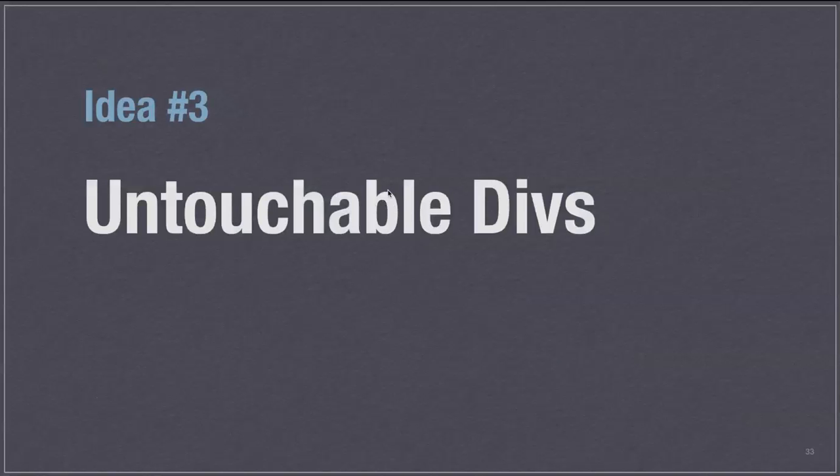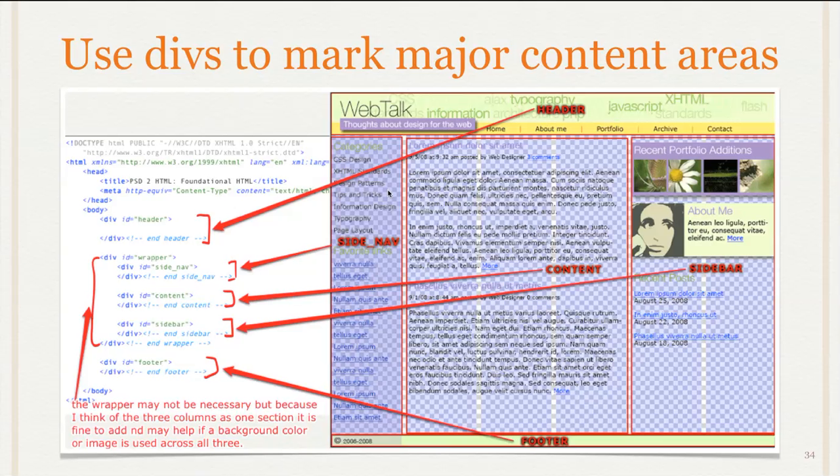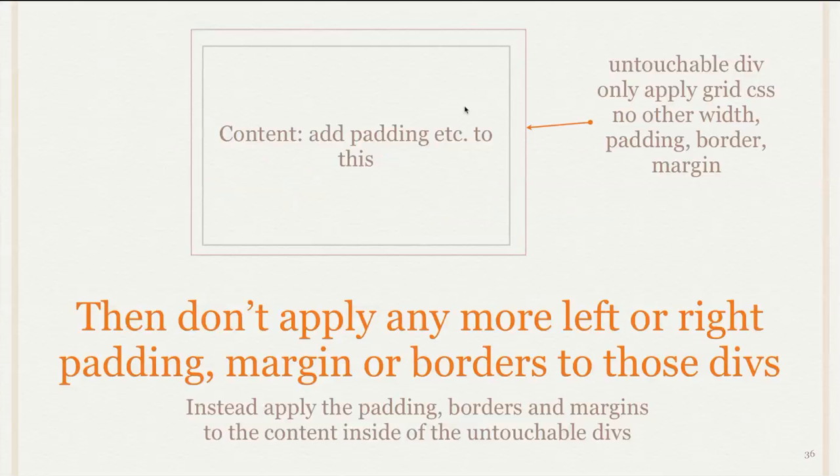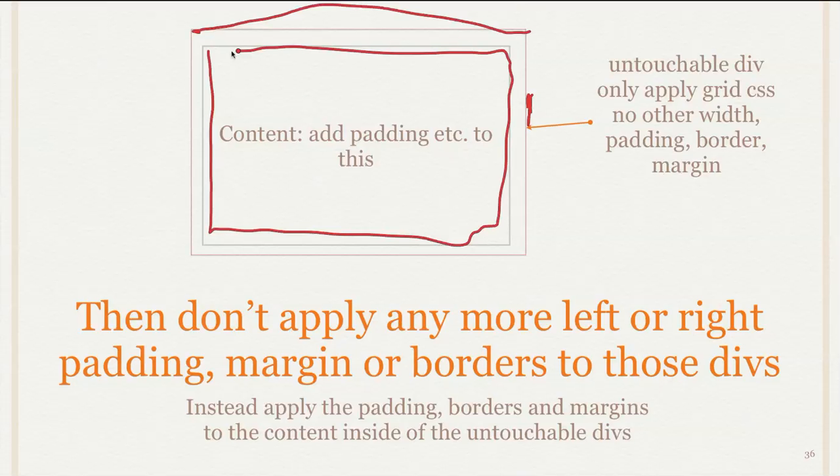So the third idea is what I call untouchable divs. It's just something I kind of made up. And the idea here is you always use divs to mark your major content areas. So here we have our header, side nav, content, sidebar, footer. Each of those has a div. And so these are what I would call untouchable divs in that we want to be able to set the width to these ones and then not add any borders, margins, or padding to them. And the reason for that, and the width would be done from the grid system that you're using, the CSS styles. But basically, this div out here, we don't want to add any padding or borders to it because this has the width from our grid system and we don't want to make that bigger or smaller. So what we do then is we add the padding, borders, et cetera, to our content area.